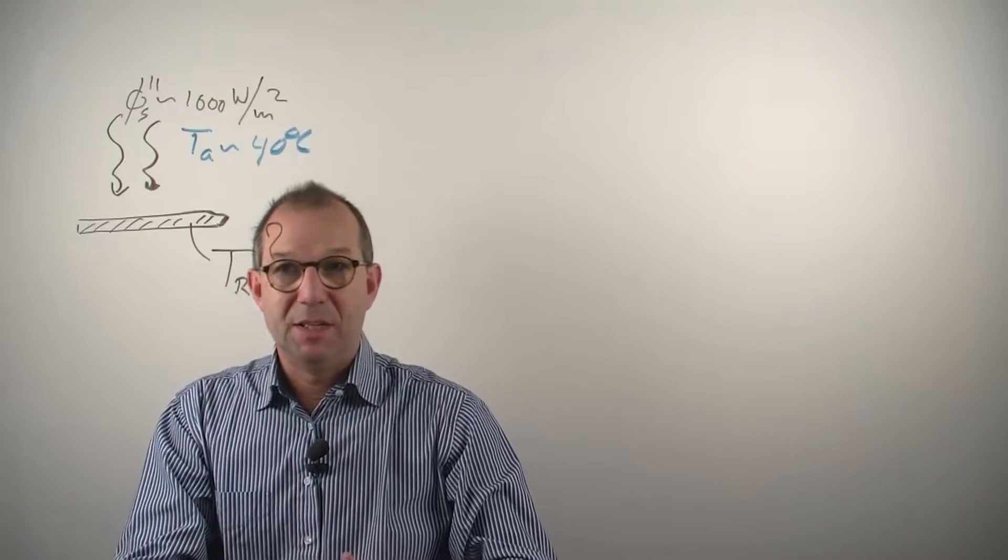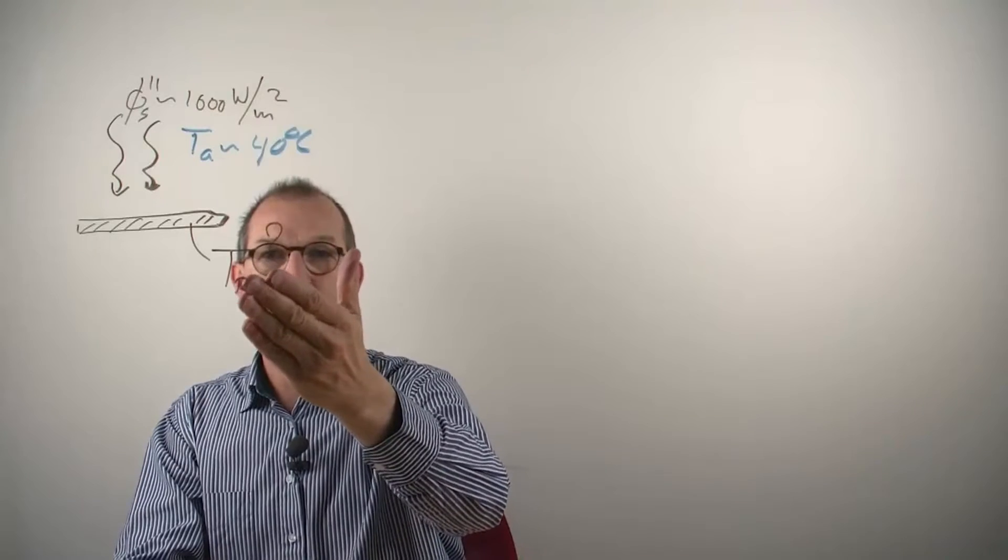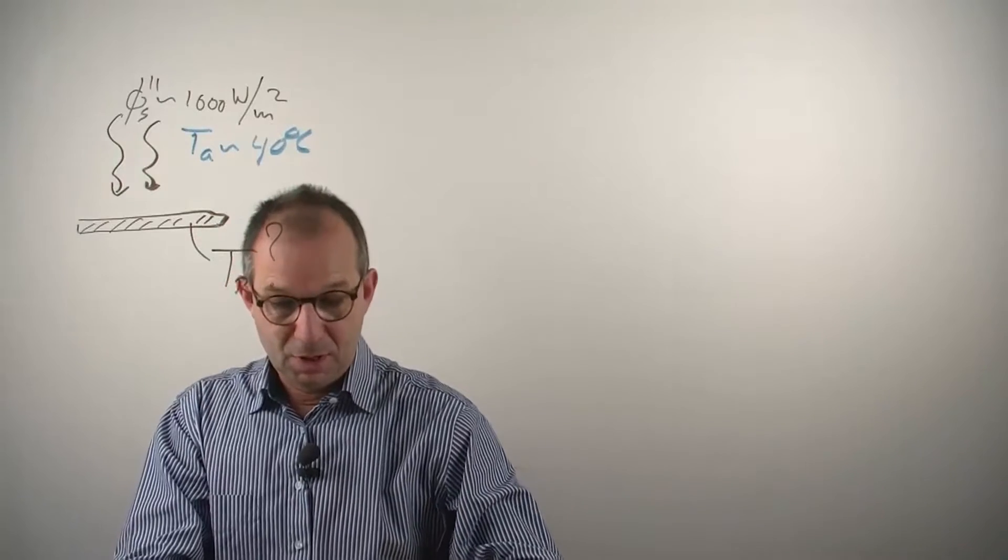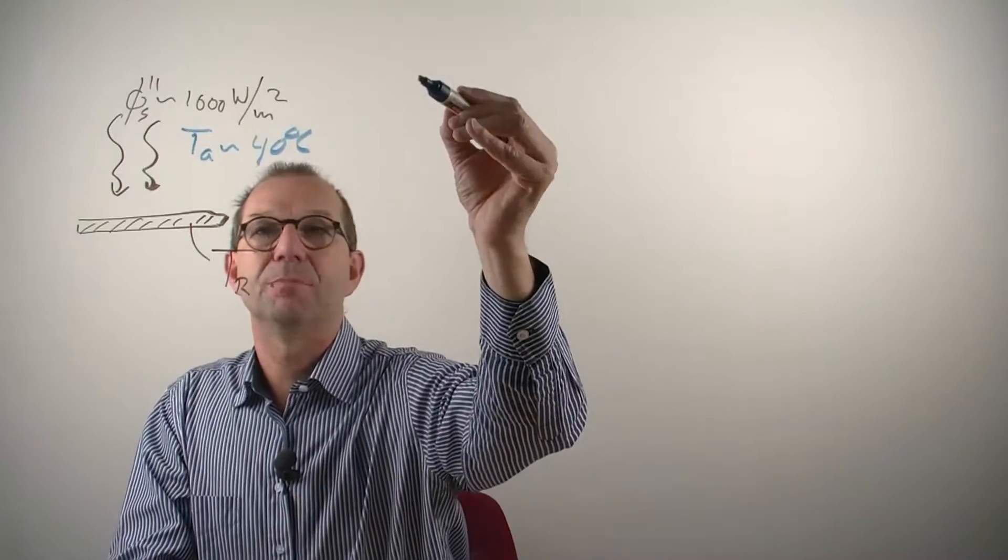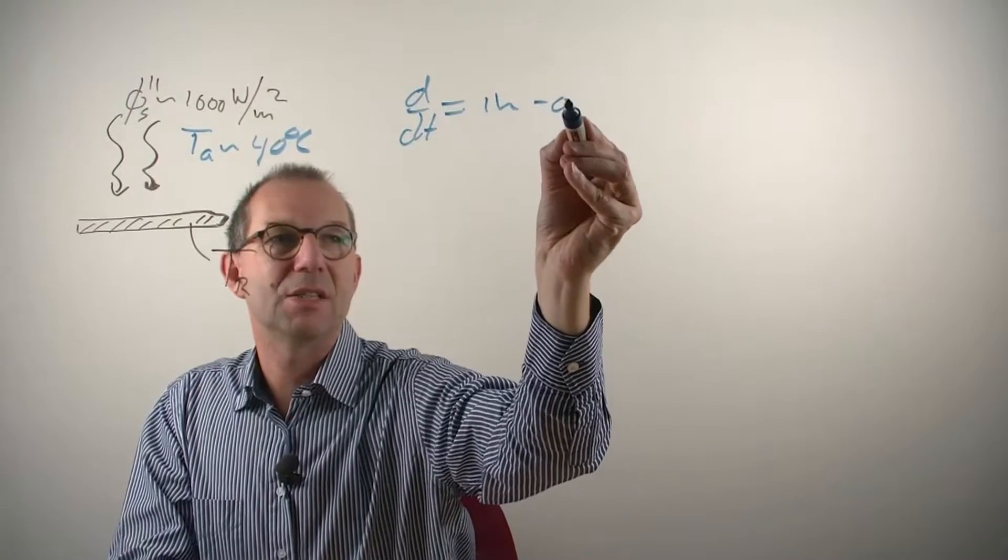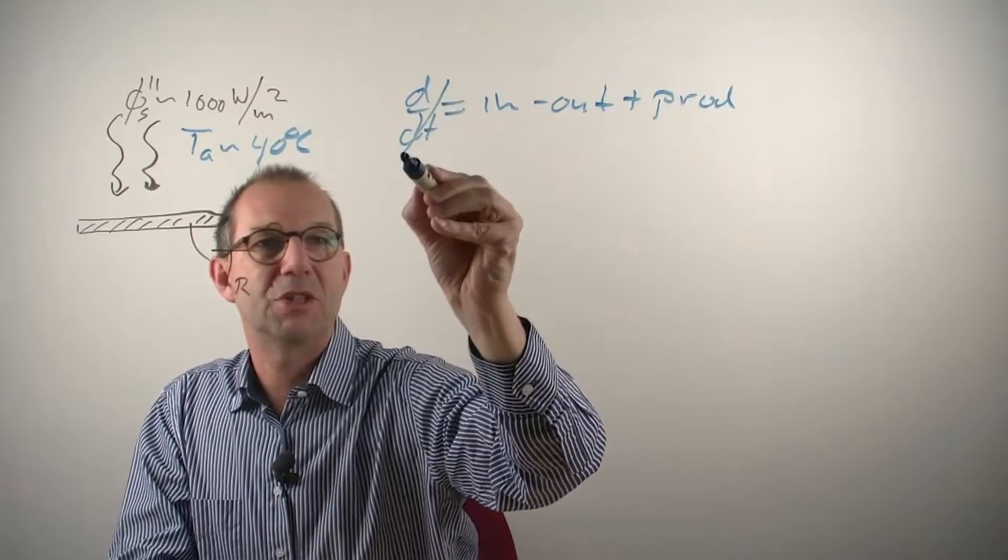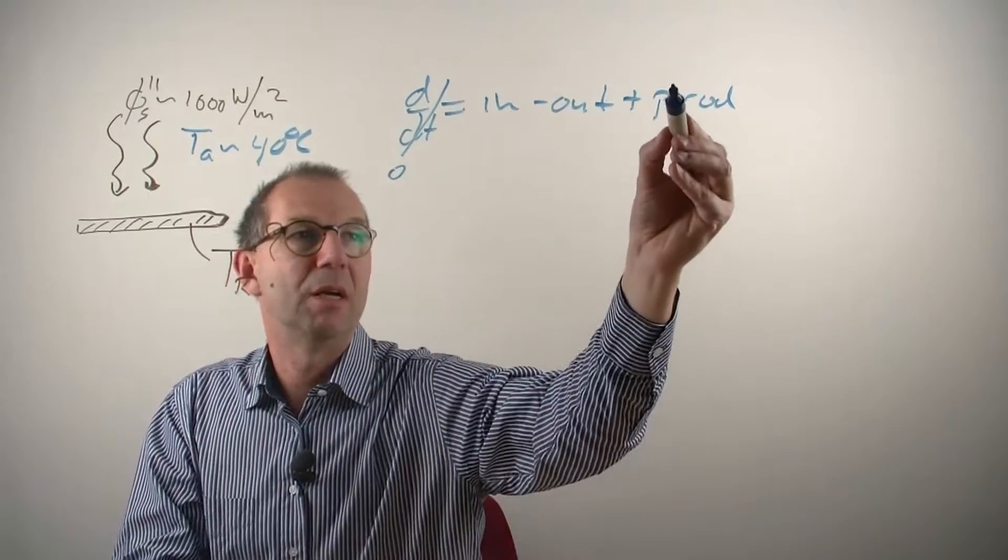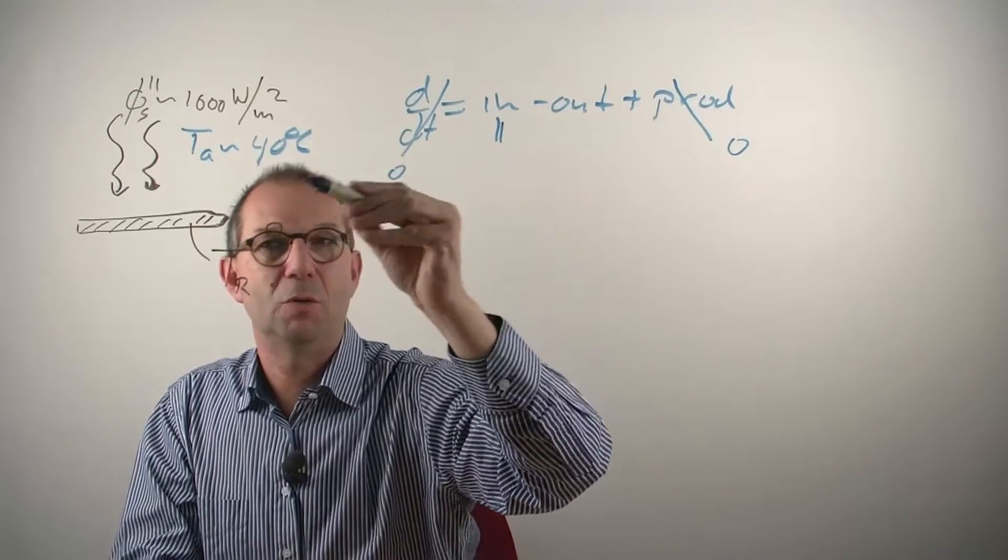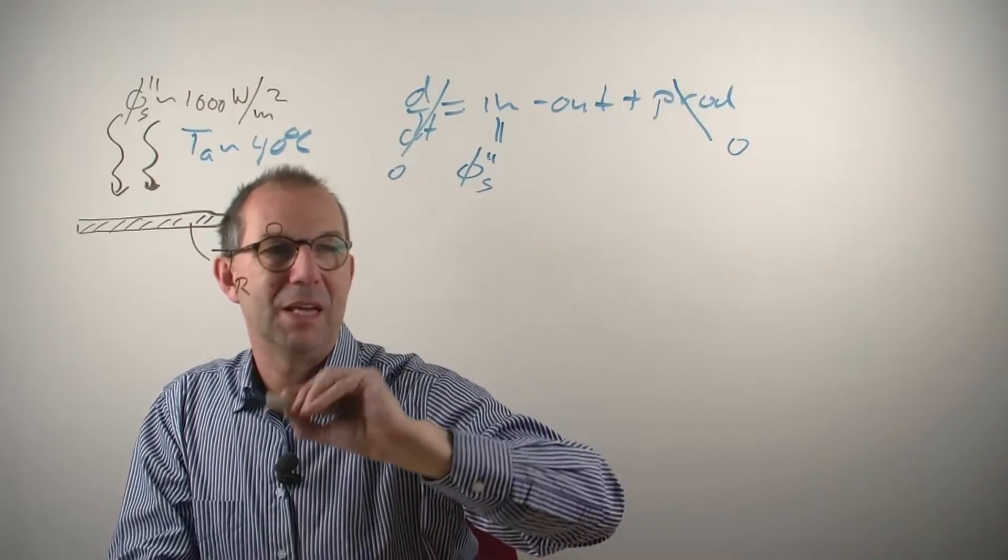If we try to analyze this, what we need to do is balance the heat. Solar light coming in, temperature difference probably arising between the hot road and the air, so heat going out. If I make a simple balance, as usual, d/dt equals in minus out plus the production. I can simplify this, I'm going to look at steady state, this is zero. There is no internal production in the road of heat, so this is zero. Incoming is a solar flux, phi double s, and we know the value.